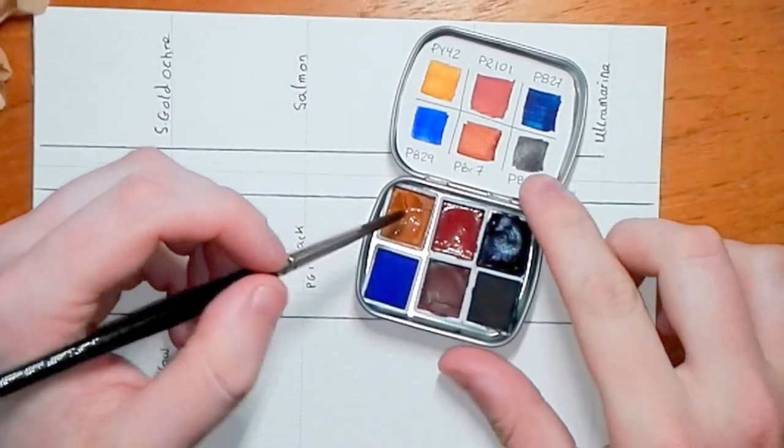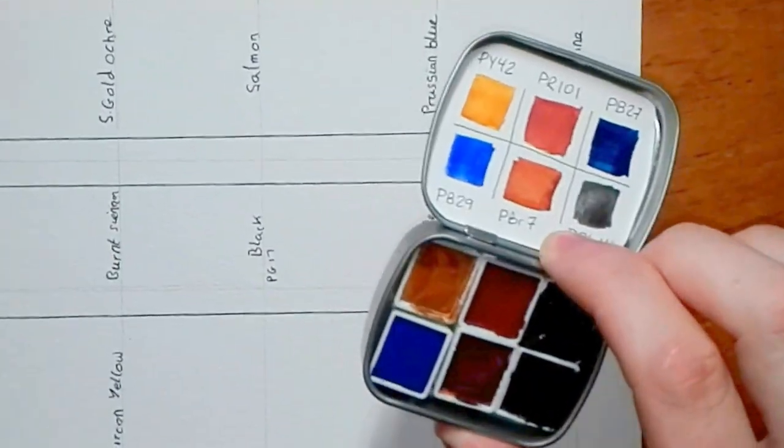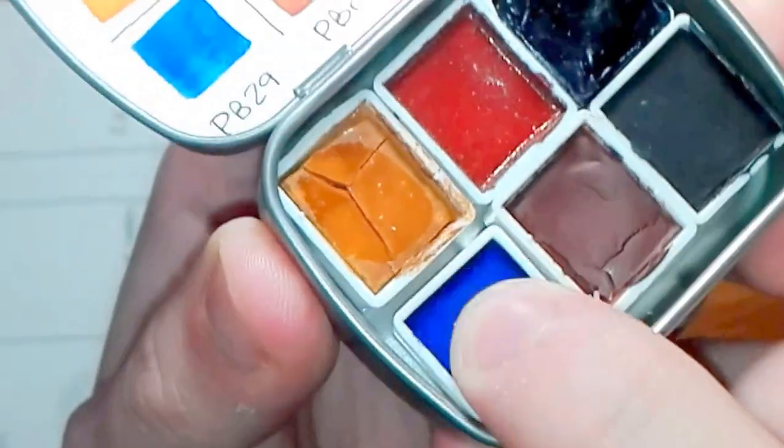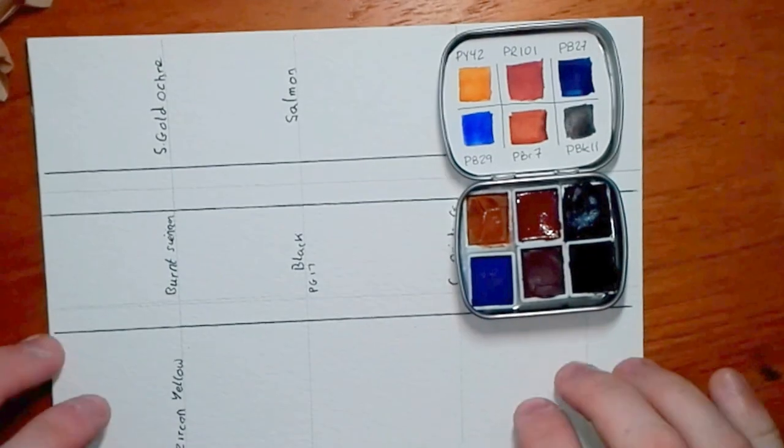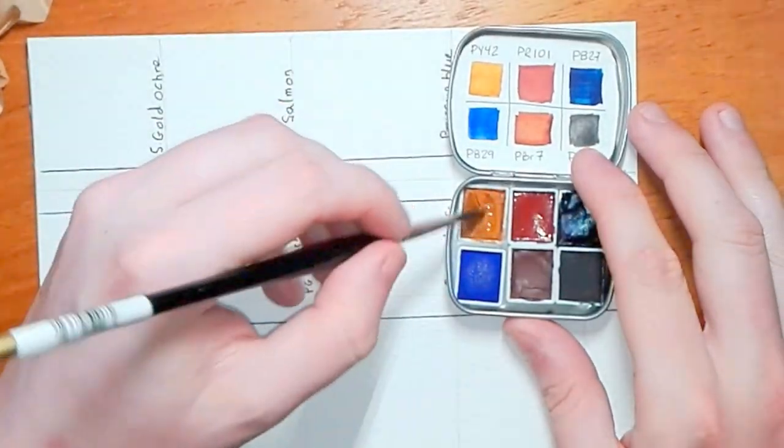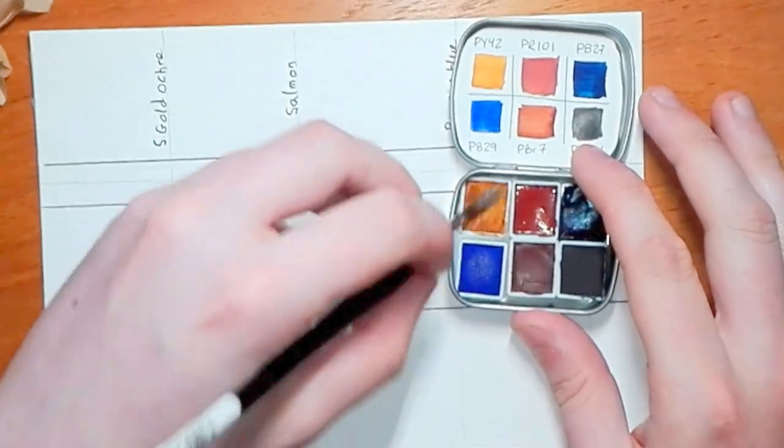So the first thing I noticed when I opened up the paint was the ultramarine blue was quite like my own. It looked like it had a powder on top and as you can see there was no powder coming off it on my finger so that's not the case. It's just the way the pigment looks. Mine also looks the same so it was quite reassuring.